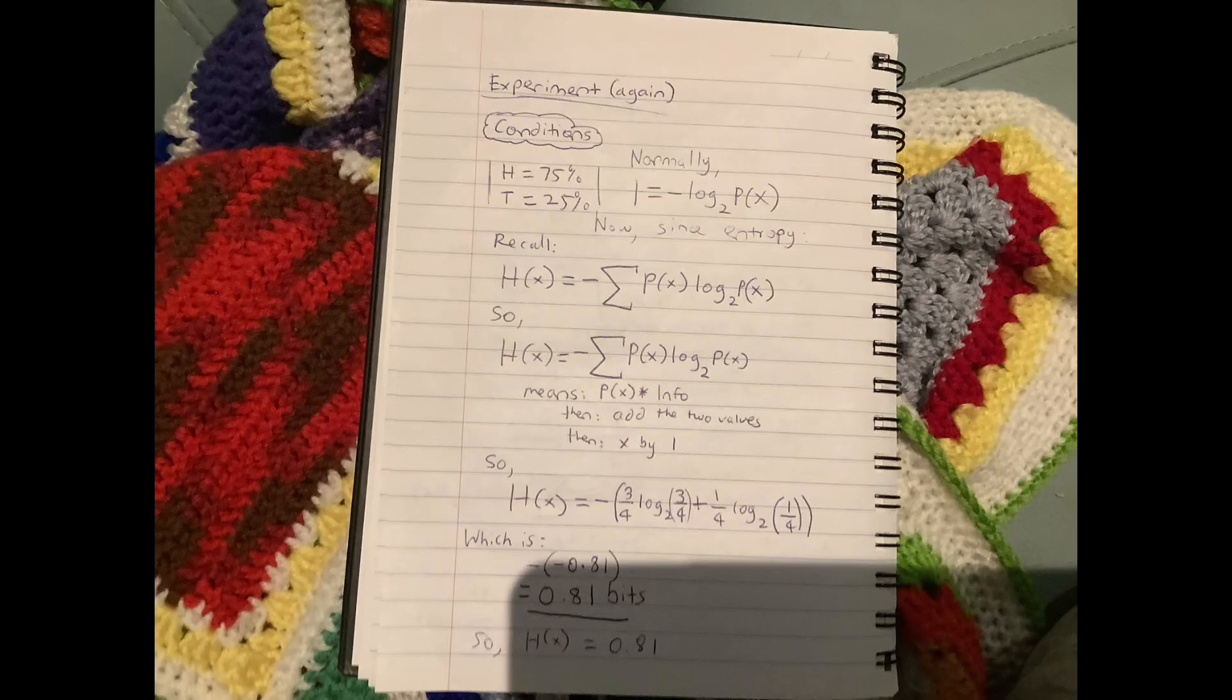In summary, entropy is simply just the normal bit formula, multiplied by a weighted average. So multiplied by the probability again. Of course, don't forget the negative sign. And then the summation sign, the sigma Greek letter sign, tells you to add it all up. To add all the calculated information for each probability together, which in this case is heads and tails.